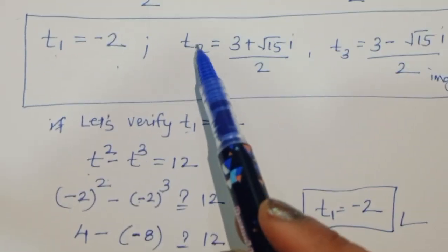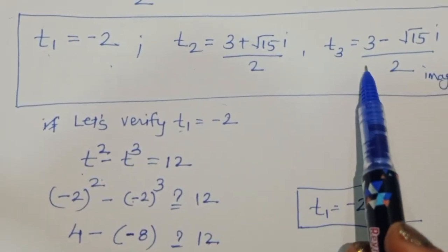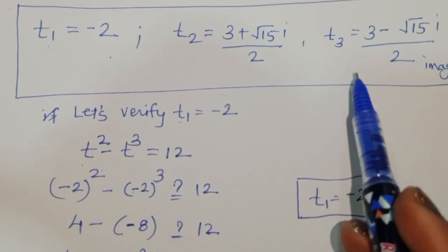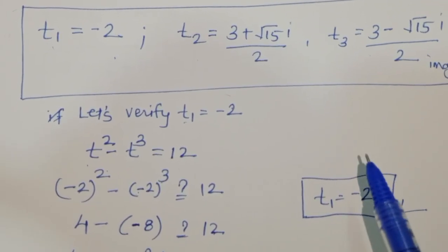The value of t1 is minus 2, and you can try verifying t2 and t3 as well. Thank you.